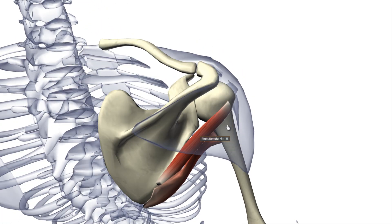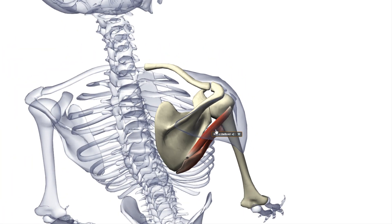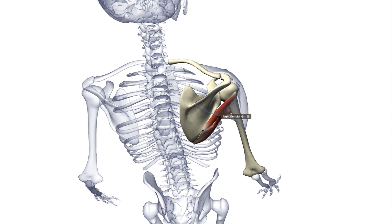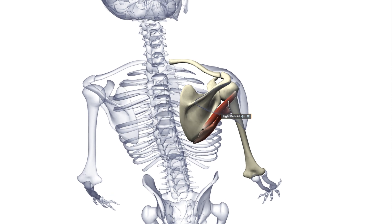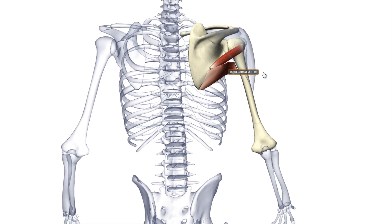If you look at where it inserts, obviously when it contracts it's going to rotate the arm laterally. And also because it inserts lower than the axis of this joint here, it's going to make the arm adduct.